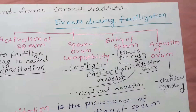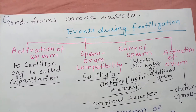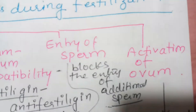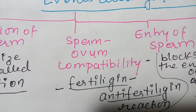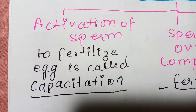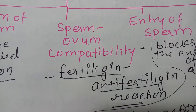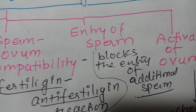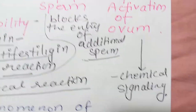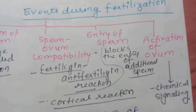The events during fertilization are simultaneous. They include: activation of sperm, activation of ovum, sperm-ovum compatibility, and entry of sperm. Activation of sperm to fertilize the egg is called capacitation. Sperm-ovum compatibility includes fertilizing and anti-fertilizing reactions. Entry of sperm blocks additional sperm entry and includes the cortical reaction.